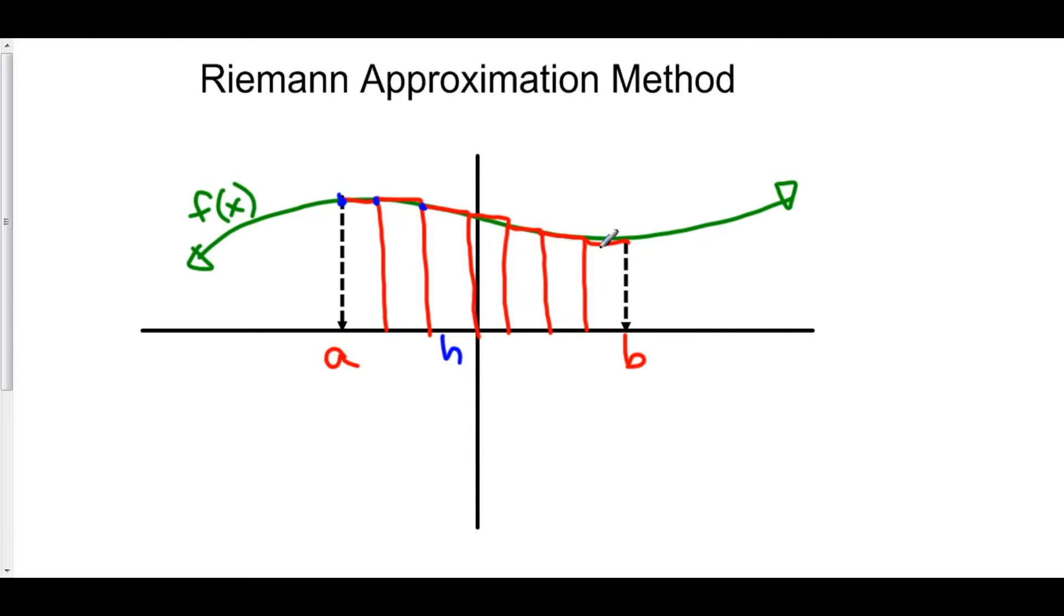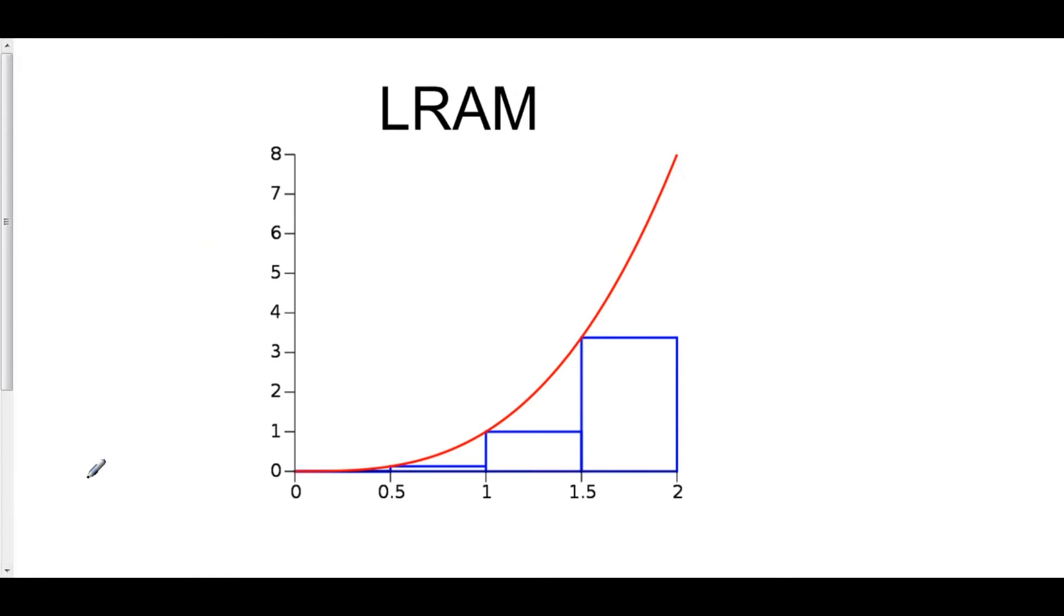That's because I just used a left Riemann approximation. Here is a clearer version of the left Riemann approximation using y equals x cubed. Notice that the first rectangle has a height of zero. The second rectangle goes up to the function value of 0.5 and then over.